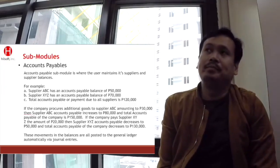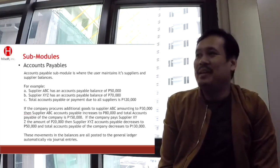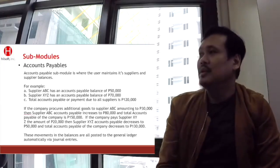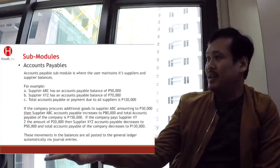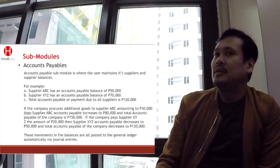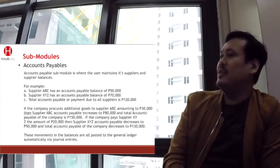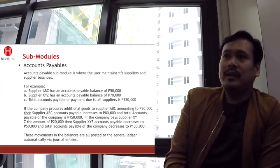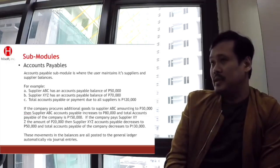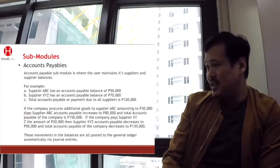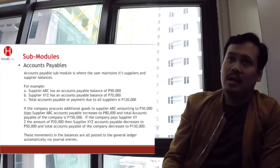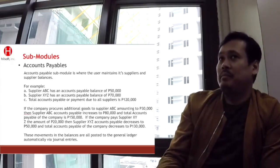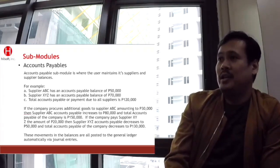Normally, pag bumili ka ng goods on credit from a supplier — if you have terms with a cell phone supplier, they give you the cellphone and say 'pay me after 30 days.' They will issue you a billing. You have to encode it in the system even though you're not paying it yet. It's a regular trade transaction — just with terms. Because the cellphone already has value. It's already a money-related transaction since the goods are already with you. The supplier is just allowing you to pay in 30 days.